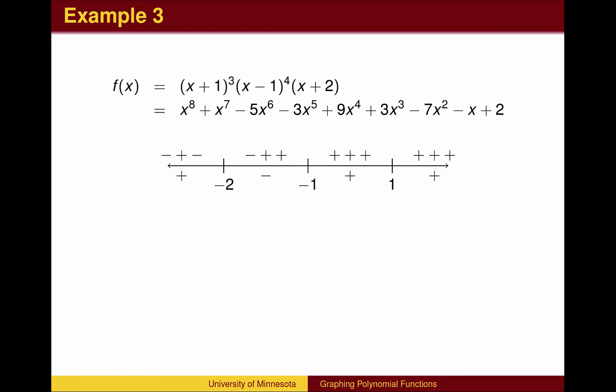So when crossing an x-intercept associated with a factor raised to an even power, we will stay on the same side. In this case, f(x) remains positive, and the graph stays above the x-axis.